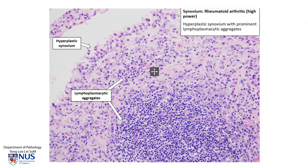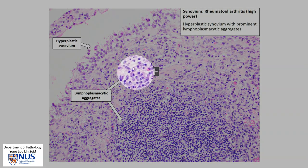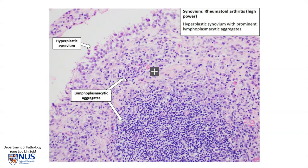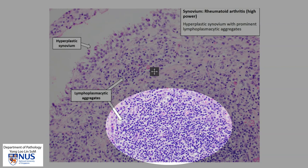This is a higher magnification view showing the hyperplastic synovial lining here. There are lots of chronic inflammatory cells within the synovial tissue. In particular, we can see very obvious plasma cells, and if you remember, these are the cells that produce antibodies. There are also numerous lymphocytes, and here is a large lymphoid aggregate.